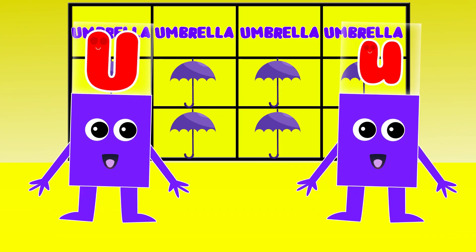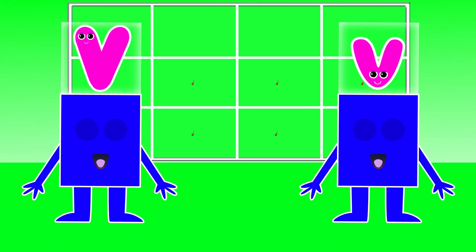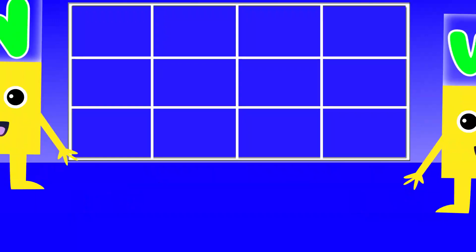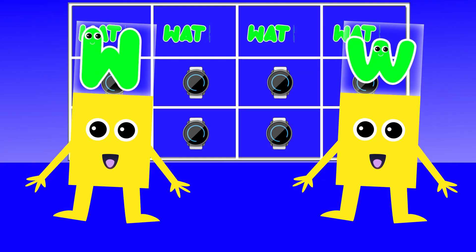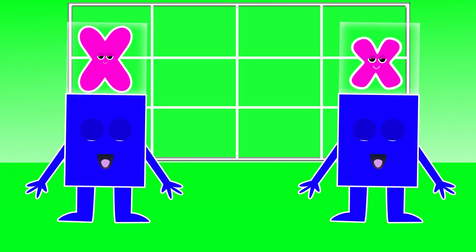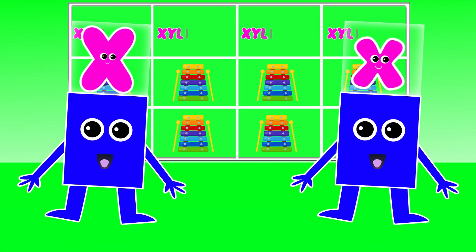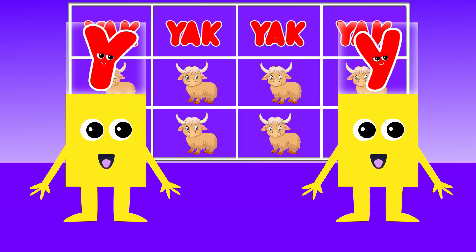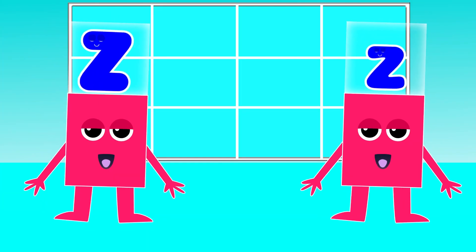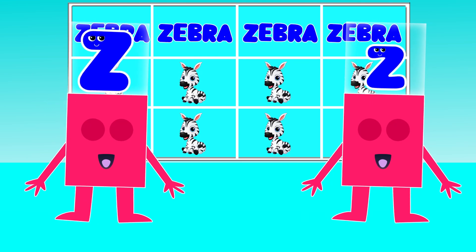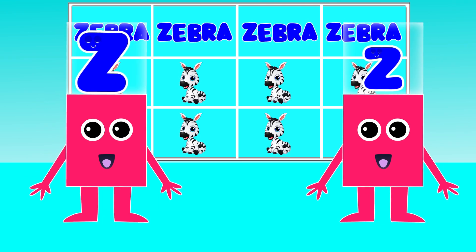U is for Umbrella. U, U. Umbrella. V is for Violin. V, V. Violin. W is for Watch. W, W. Watch. X is for Xylophone. X, X. Xylophone. Y is for Yak. Y, Y. Yak. Z is for Zebra. Z, Z. Zebra.